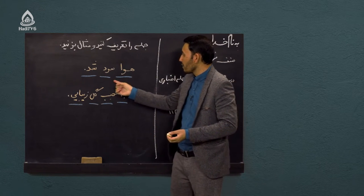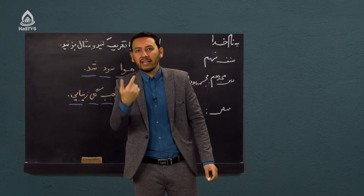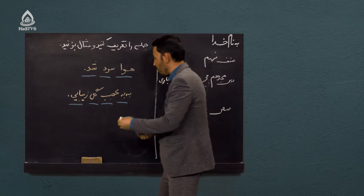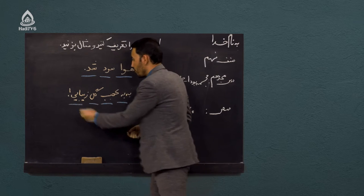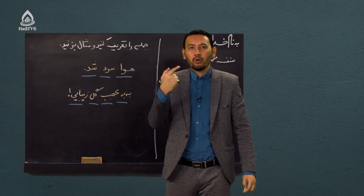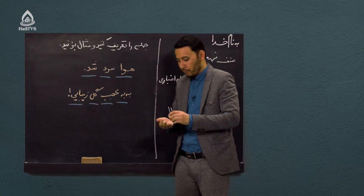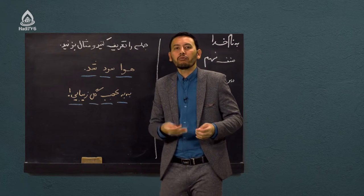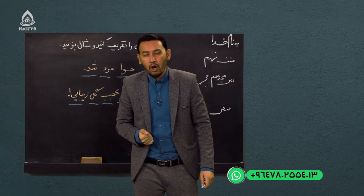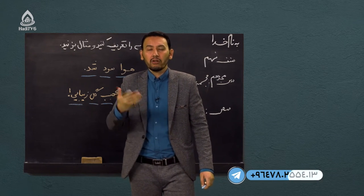جمله اول «هوا سرد شد» یک جمله خبری است؛ جمله‌ای که می‌خواهد یک خبری را به مخاطب برساند. جمله «به‌به عجب گل زیبایی» در انتهایش باید یک علامت تعجب بگذاریم که نشان‌دهنده این است که این جمله، جمله تعجبی است. می‌تواند جمله پرسشی هم باشد. مثلاً: آیا غذا خورده‌ای؟ آیا به مکتب رفته‌ای؟ این‌ها جملات پرسشی هستند.